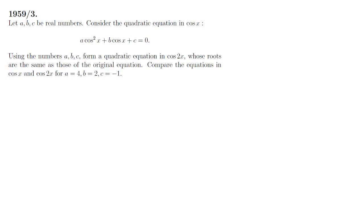A, B and C are real numbers and we are presented with a quadratic equation in cos x. We're asked to use the numbers A, B, C to form a quadratic equation in cos 2x with the same roots. And we're asked to compare the equations for a particular set of values for A, B and C.